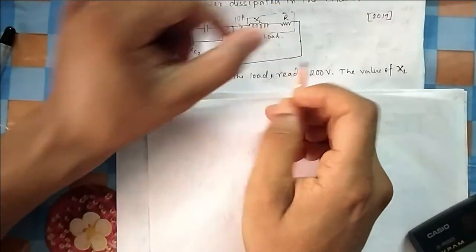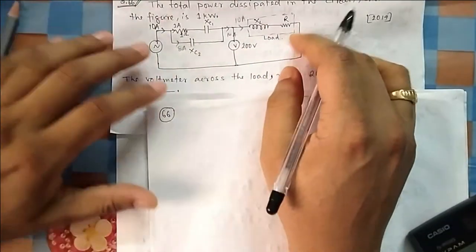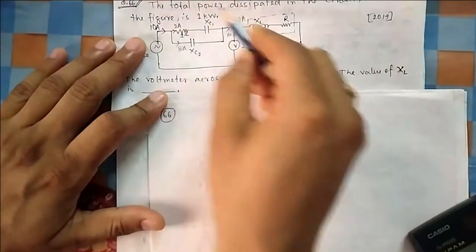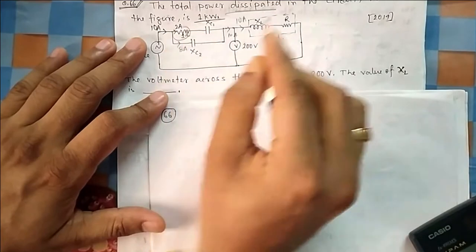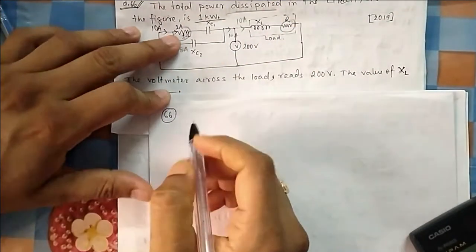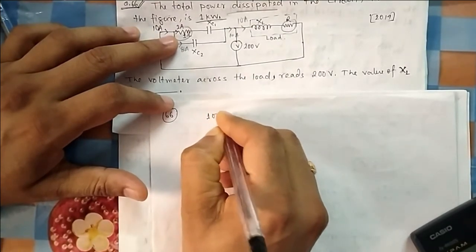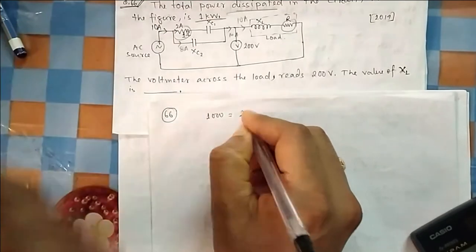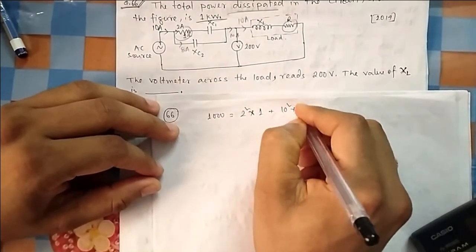Since it is an ideal voltmeter, no current flows through it, so 10 ampere flows through the load as well. The power consumed in the circuit is 1 kilowatt. Power dissipates only in resistors — they absorb power. So the power dissipated is 1 kilowatt, which equals i²R.